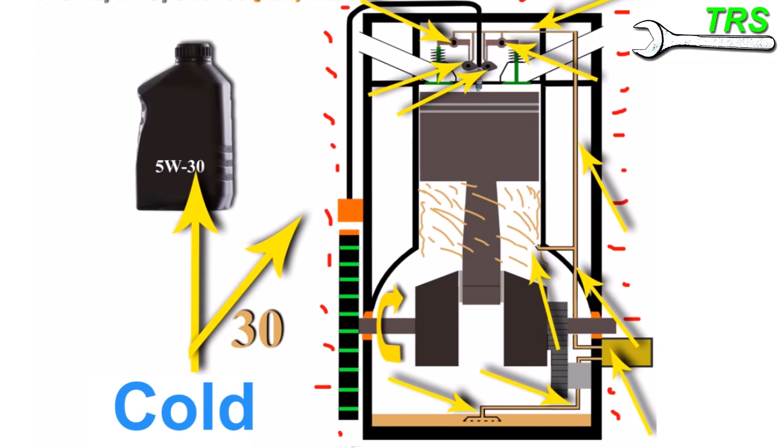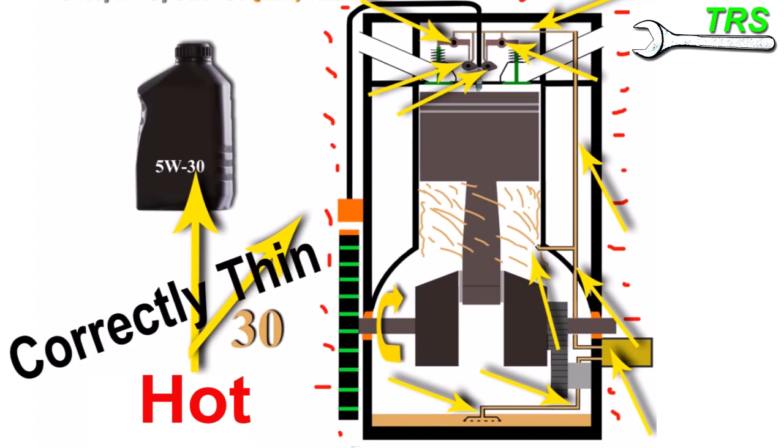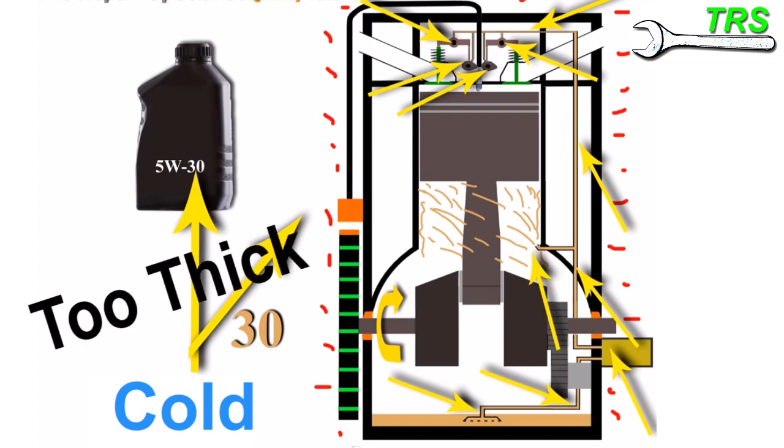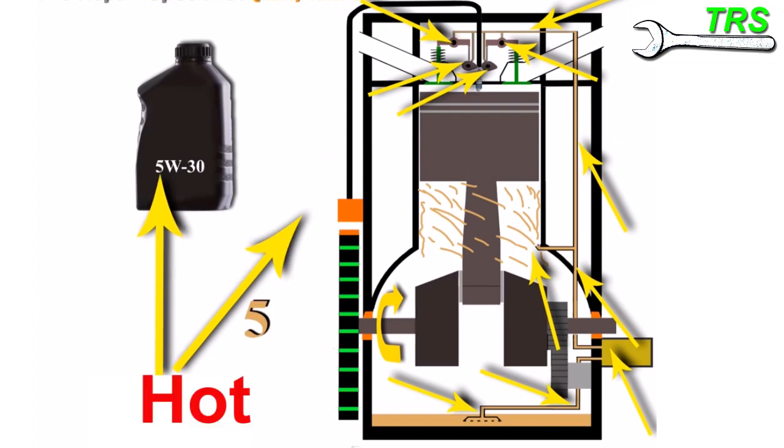But then it doesn't take on the consistency of a 30 viscosity when the 30 viscosity is cold, it doesn't take on that thickness. It actually takes on the thinner viscosity that the 30 would become in the heat. So it's still thin, but it takes on the consistency of a hot 30 rather than a hot 5. So there's never a consistency of a cold 30 because that would be way too thick, and there's never a consistency of a hot 5 because that would be way too thin for the engine.